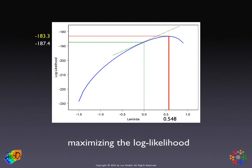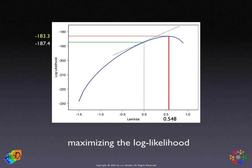To illustrate this concept, we have the actual log likelihood function for a spatial error model using the Columbus sample dataset. The blue function changes as we alter the value of parameter lambda on the horizontal axis. We can see the slope of the tangent at the value zero, and as we move to the maximum, the slope of the tangent becomes zero because the tangent becomes horizontal. The parameter value that solves the optimization problem is the maximum likelihood estimate.